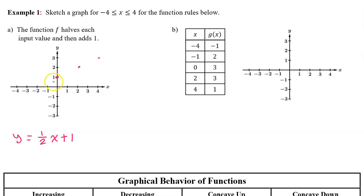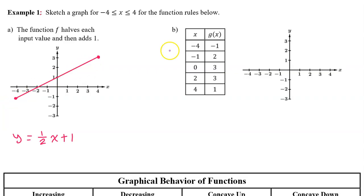Similarly, going left — down 1, left 2, down 1, left 2 — completes the line. We want to represent all values from negative 4 to positive 4, so we fill in a solid line. Part b: the rule is given as a table, so we simply plot the input-output pairs on the graph.